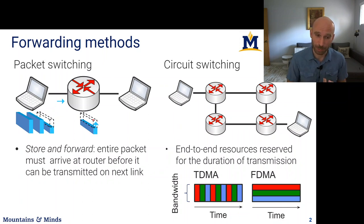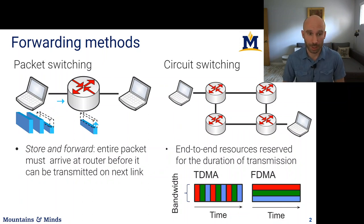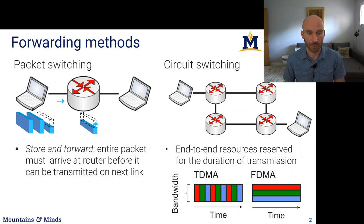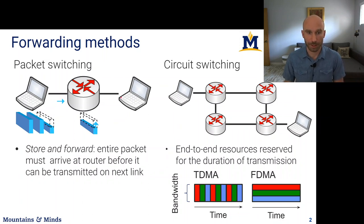Once we have the whole packet, only then can we start forwarding it. The reason is that we want to process the packet and see where it needs to go. Sometimes we can make the decision right on the headers, but in general there is a separate function of data arriving and then a separate function of data being forwarded. A long stream of data is divided into packets.